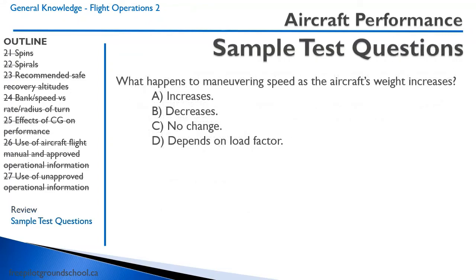Test question: What happens to maneuvering speed as aircraft weight increases? A increases, B decreases, C no change, D depends on load factor. Maneuvering speed equals stall speed times the square root of the maximum load factor. The stall speed increases with weight, so maneuvering speed also increases. Answer: A.